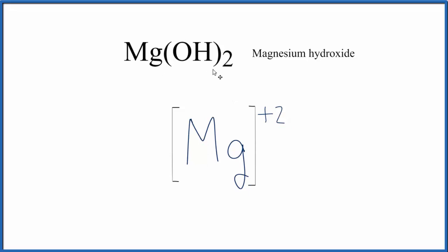When we look at the formula for MgOH2, the 2 means there's 2 OHs, 2 hydroxide polyatomic ions. So we'll put 1 on each side of the Mg. We'll put 1 over here, and then 1 right here.